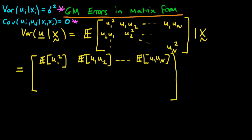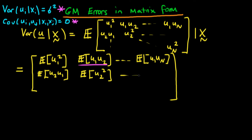If we move to the second row, the first component is just going to be the expectation of u2 times u1 given x. We can see straight away that that's the same thing as the expression above, because it doesn't matter whether we multiply u2 times u1 or the other way around — they're both exactly the same thing since both are just scalars. The second component is the expectation of u2 squared given x, and we can continue to fill out that row and the columns. The last component in the last row is just the expectation of un squared given x.